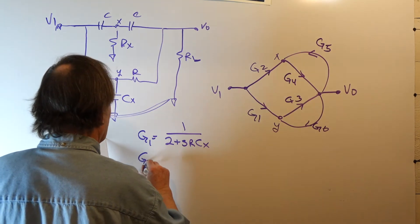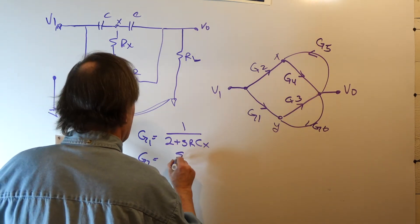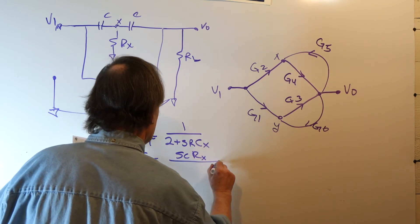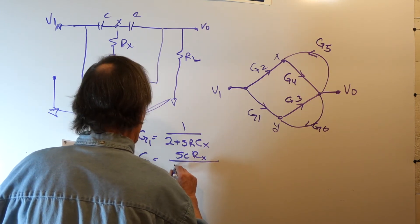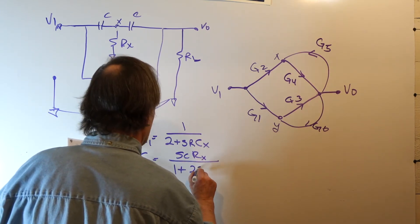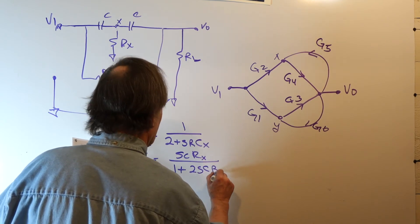The values for the gains are: G1 is 1 over 2 plus SRCX, gain 2 is SCRX over 1 plus 2SCRX,